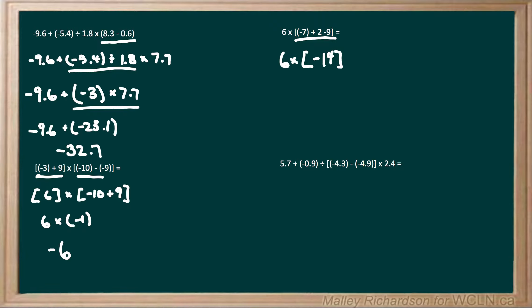So now we have a positive 6 multiplied by negative 14. A positive multiplied by a negative gives us a negative answer, giving us negative 84. And we can't forget about the negative sign out front.